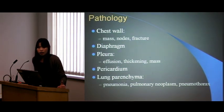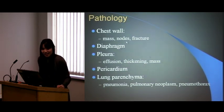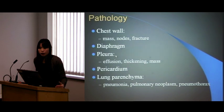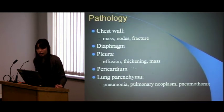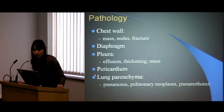Pathology: in the chest wall, you can look for masses, nodes, and fractures. For the diaphragm, you can look for paralysis, thickening, and paradoxical movements. In the pleura, you can look for effusions, thickening such as mesothelioma or other malignancy, and masses. The pericardium can be assessed for gross pericardial effusions, and the lung parenchyma for pneumonia, infections, neoplasms, and pneumothorax.